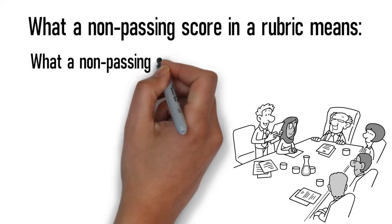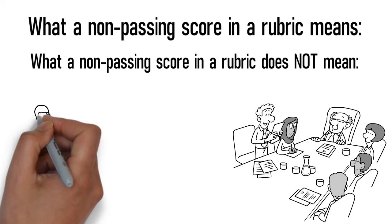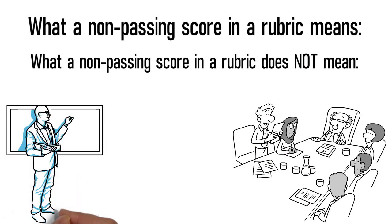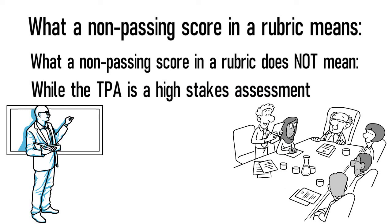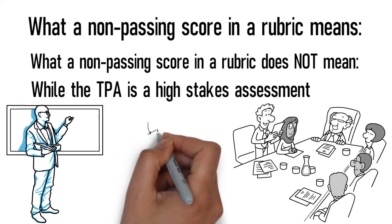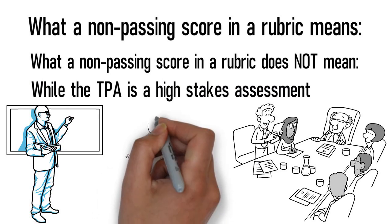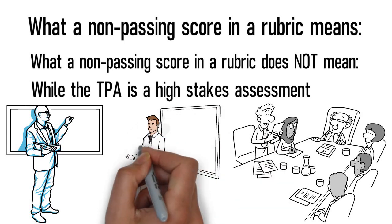What a non-passing score in a rubric does not mean. That a candidate is unfit to be a teacher or does not have the skills to become a teacher. While the TPA is a high-stakes assessment, it is not the only measure of your teaching. A simple oversight can cause a non-passing score, as any missing element in a rubric can cause the score to lock at a very low score, no matter how great the rest of the content is.